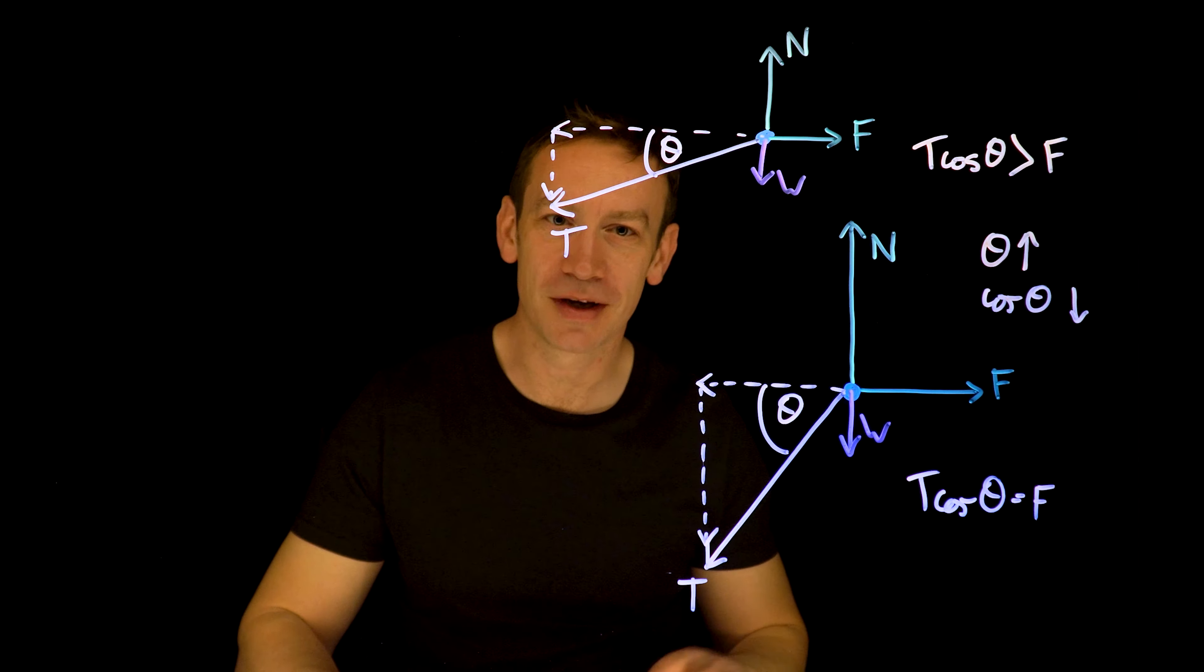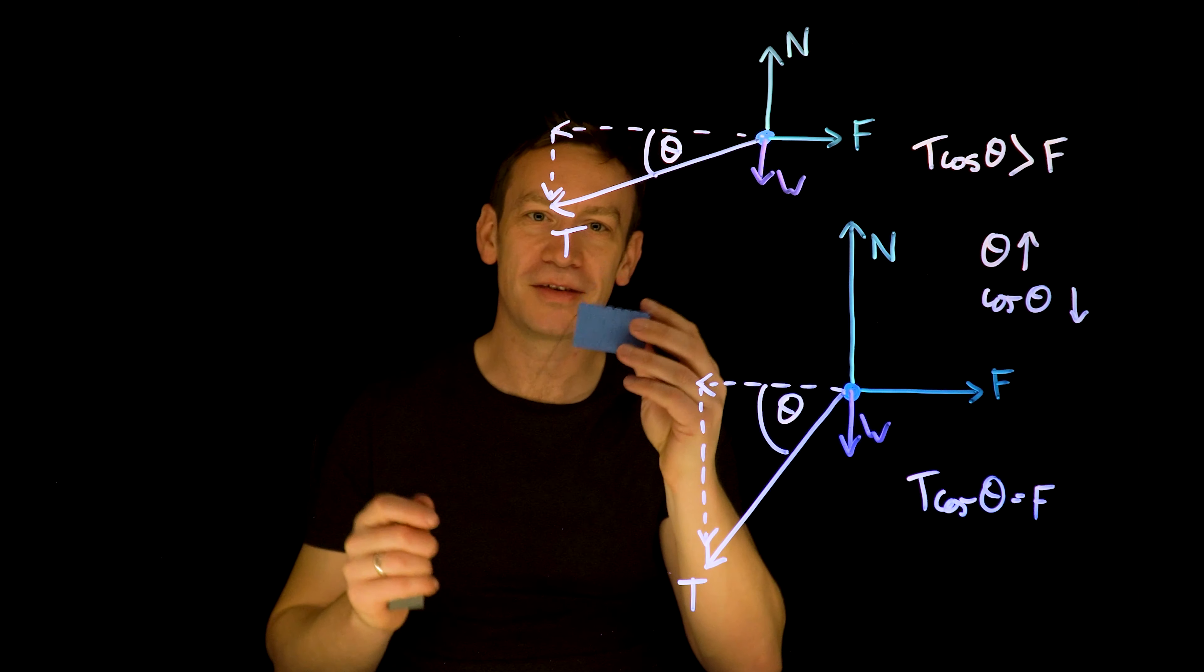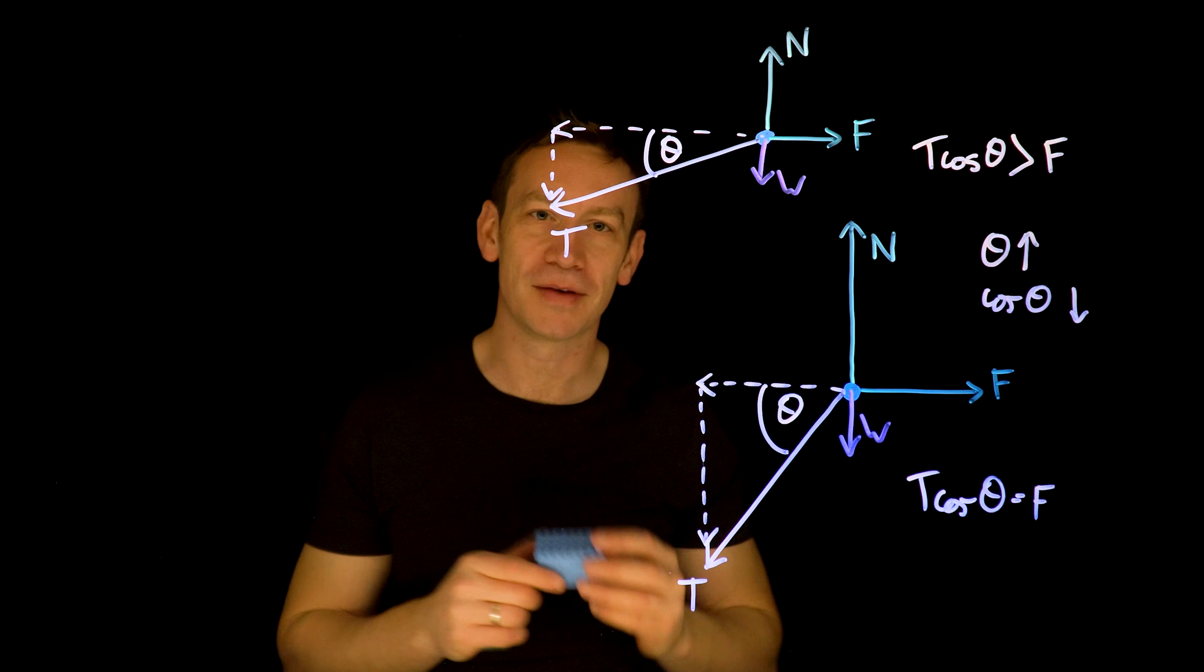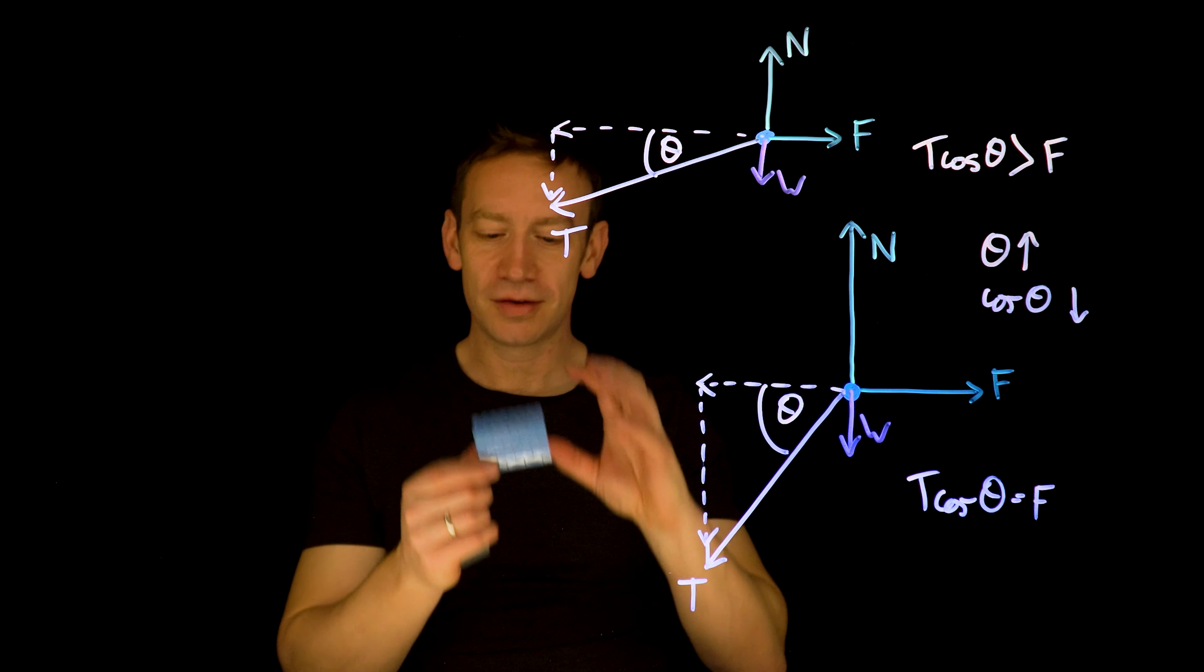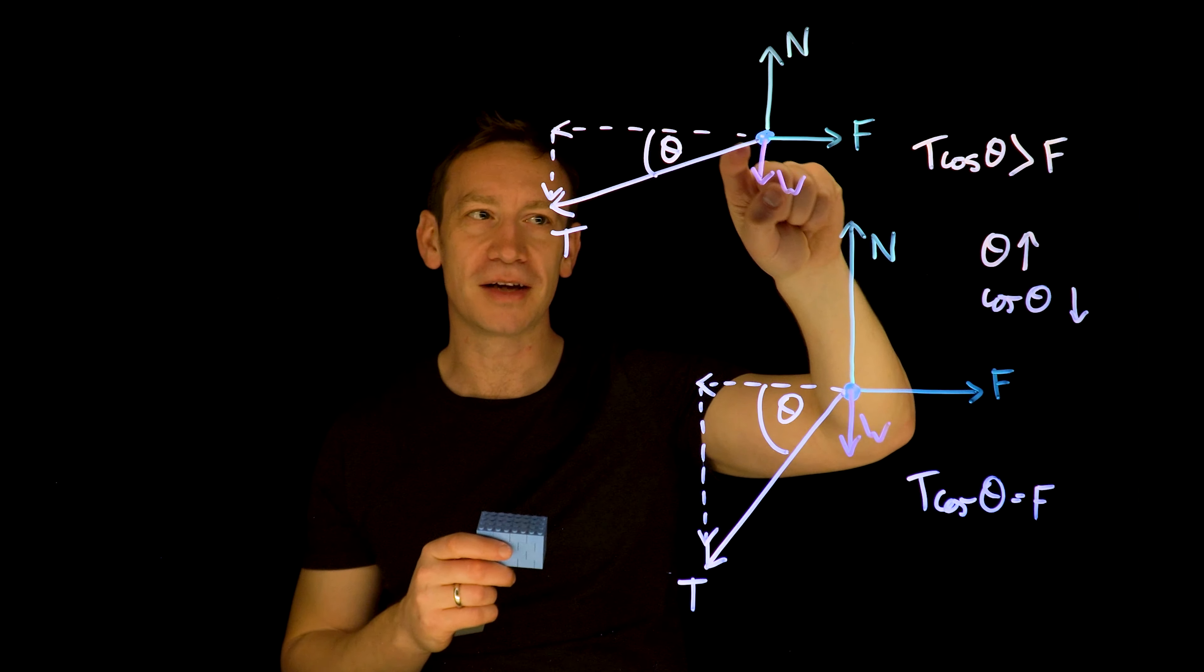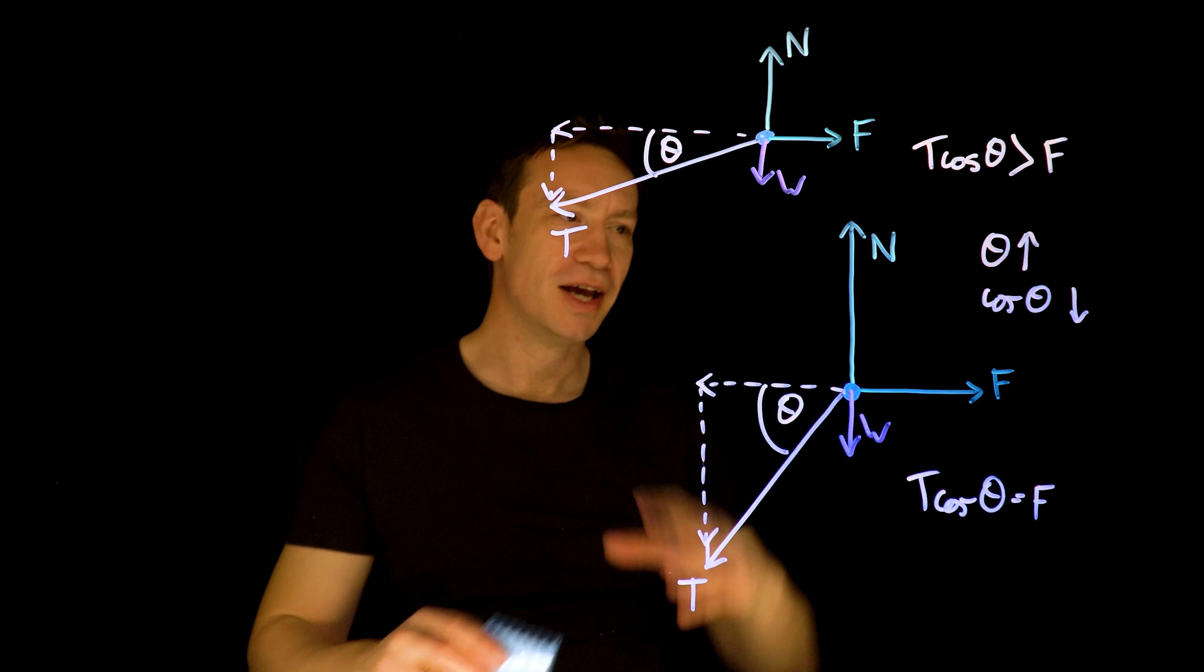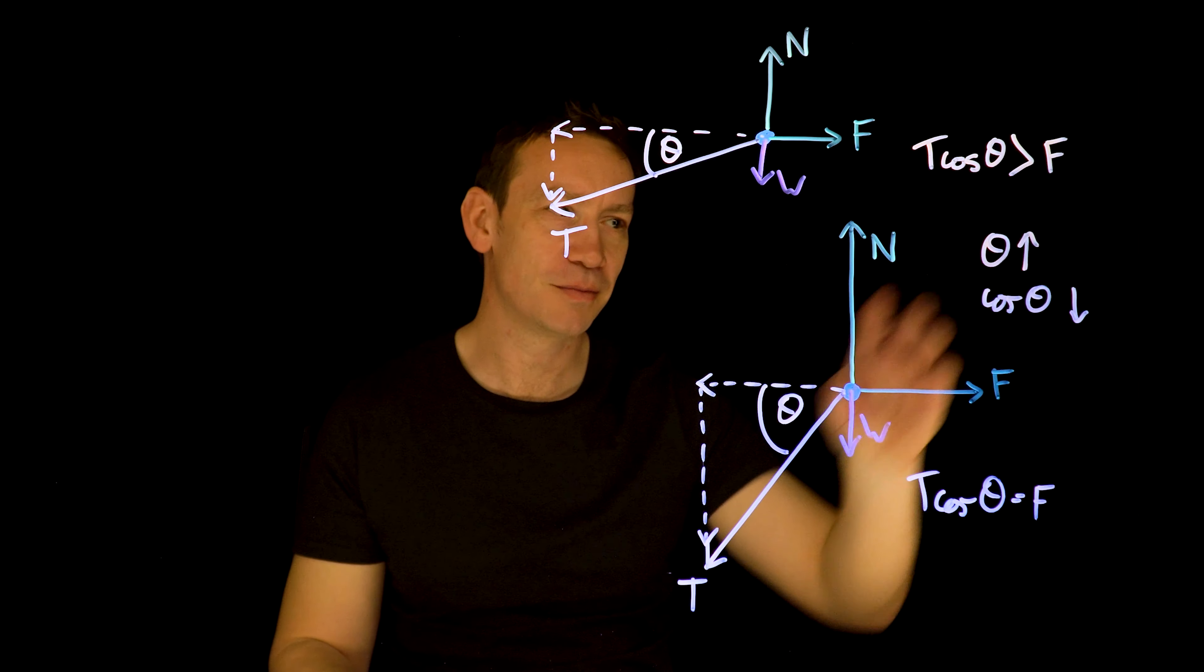So yeah, basically that is how we can explain why this block initially starts to accelerate, and then it's going to come to rest and stop before it gets to the edge of the table. We can do it by just simplifying the whole system to maybe just considering the forces acting on the block. We can draw a free body diagram, we can look at the forces, and then with a bit of analysis, and including bits of trigonometry.